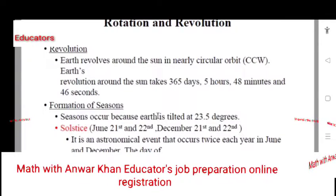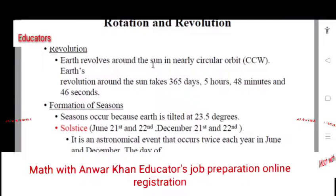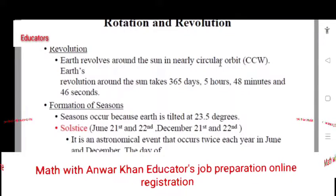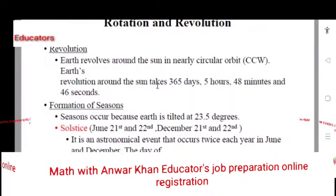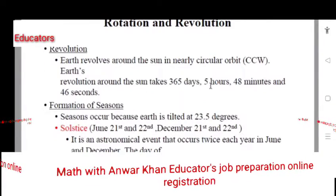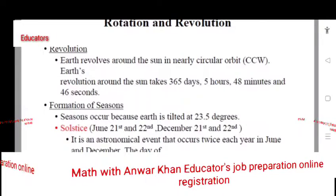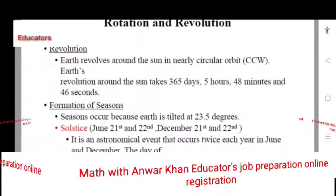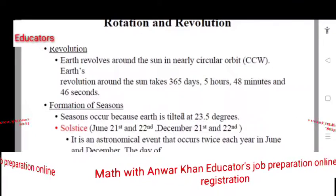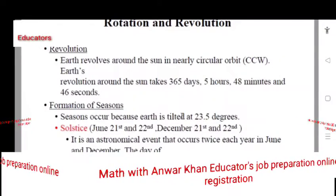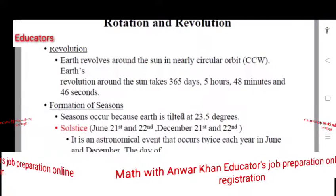Revolution is different from rotation. Earth revolves around the Sun in a nearly circular orbit. The Earth's revolution around the Sun takes 365 days, 5 hours, 48 minutes and 46 seconds. We call this one year.